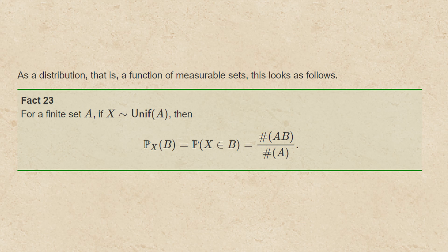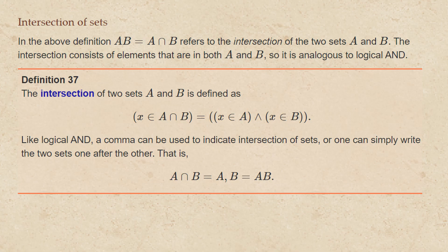For a finite set A, if x has distribution uniform over A, then the probability that x lands in any particular set B will be the counting measure of A intersect B divided by the counting measure of A. In the above definition, writing A and B together with the intersection symbol refers to the intersection of these two sets.